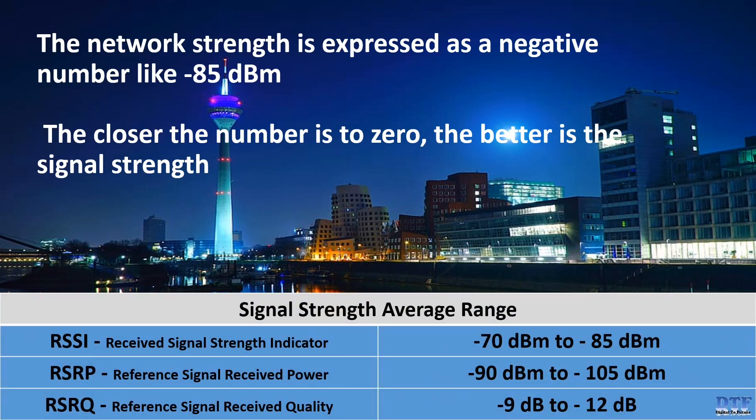The average signal strength for RSSI is minus 70 dBm to minus 85 dBm, which is a good range. The average signal strength for RSRP is minus 90 dBm to minus 105 dBm, which is a good range. The average signal strength for RSRP is minus 9 dBm to minus 12 dBm, which is a good range.